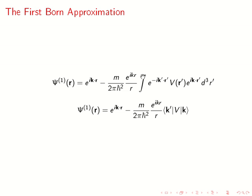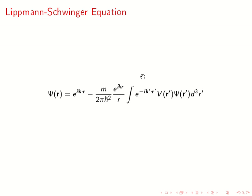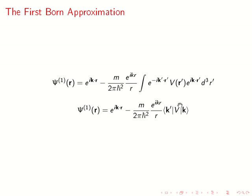So the second Born approximation. You may be able to guess what it is. It's basically subbing the first Born approximation in for this ψ. In other words we get the following.